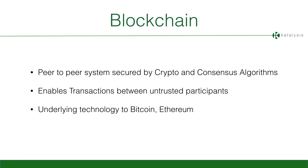So very quickly: a blockchain is a peer-to-peer system secured by cryptography — not cryptocurrencies; for those of you who think crypto means cryptocurrency — and a consensus algorithm. It enables transactions, in the case of Bitcoin, between untrusted participants. That's an interesting aspect that we use. And it is the underlying technology of Bitcoin, the most well-known implementation of a blockchain.